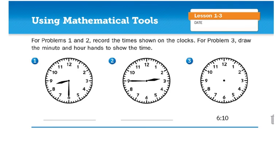Let's go ahead and move into our math journal. We're in lesson 1-3. If you need more time to get your math journal, go ahead. We are on journal page 5. It says using mathematical tools. For problems 1 and 2, record the time shown on the clocks. For problem 3, draw the minute and hour hands to show the time. Let's look at the hour hand. It's between 8 and 9, so it's 8 something. Then we count by 5: 5, 10, 15, 20, 25, 30. 8:30.